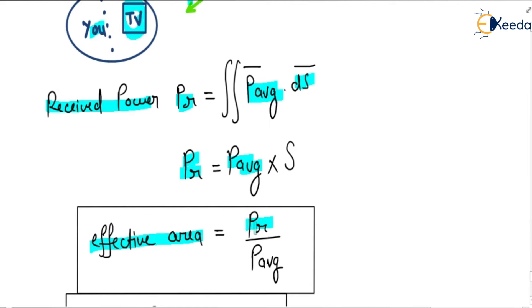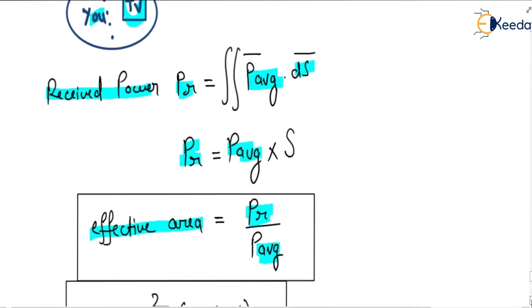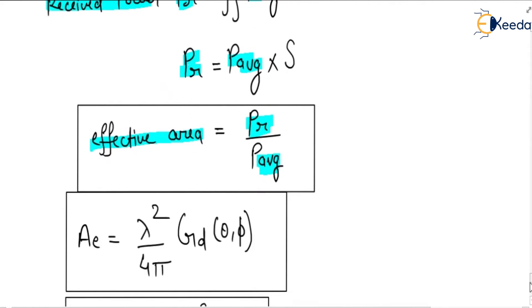By definition, effective area is PR divided by P average. When we calculate this, it is also equal to Ae = λ²/(4π) × GD(θ,φ), where GD is directive gain.